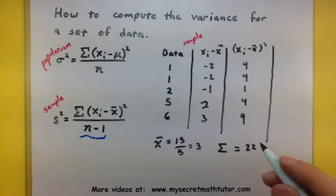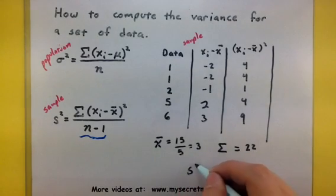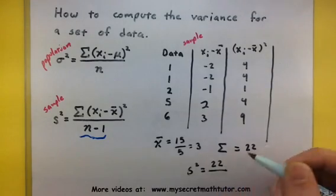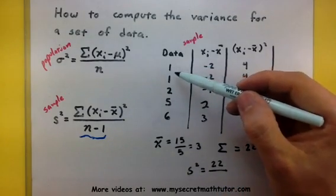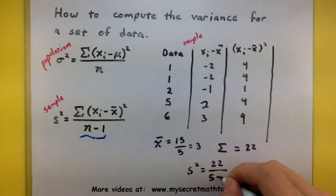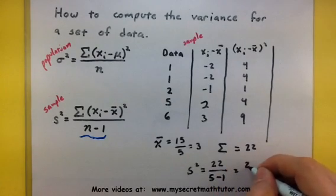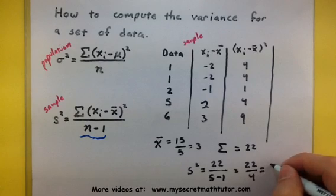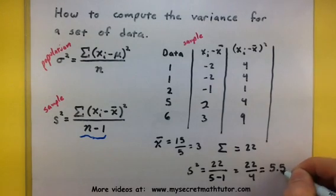So now in order to find the variance, I'm going to take my sum of 22 and divide it by the number of data points: 1, 2, 3, 4, 5, minus 1. So 22 divided by 4. This will give me a variance of 5.5.